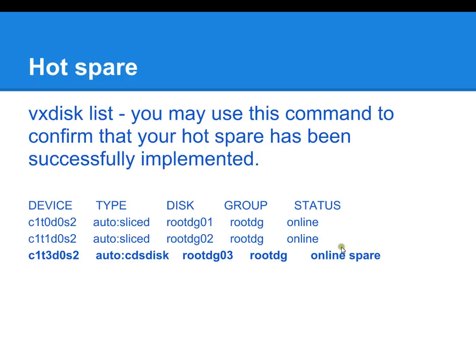In our output here, we can see that controller one, target three, disk zero has been marked as an online spare. So what would happen is that if either of these two disks fail on target zero or target one, then target three would kick into action and basically ensure the integrity of the mirror, giving you time to replace either of these failed disks and bring the system back to its normal state of operation. The reason for having a hot spare is that you want to make sure you don't have a system outage due to back-to-back disk failures, because sometimes that can happen.